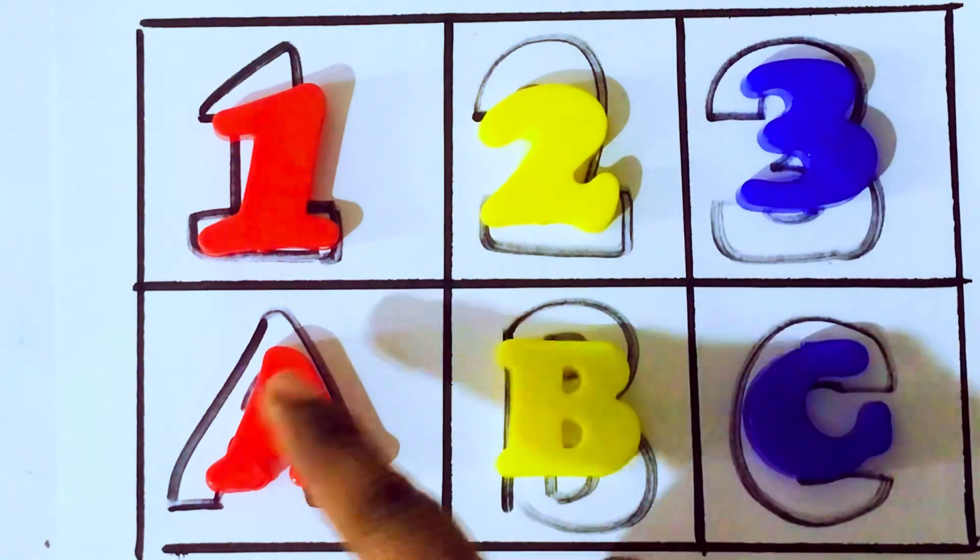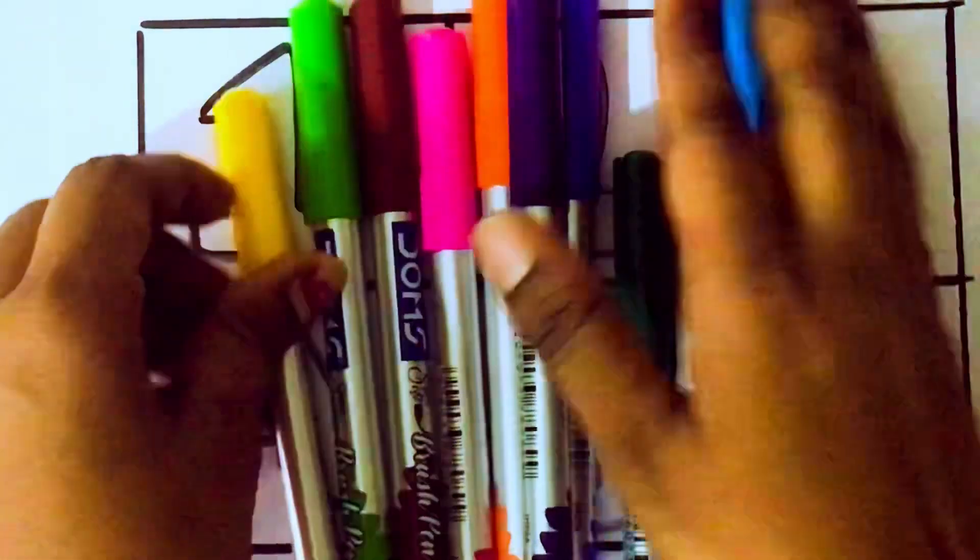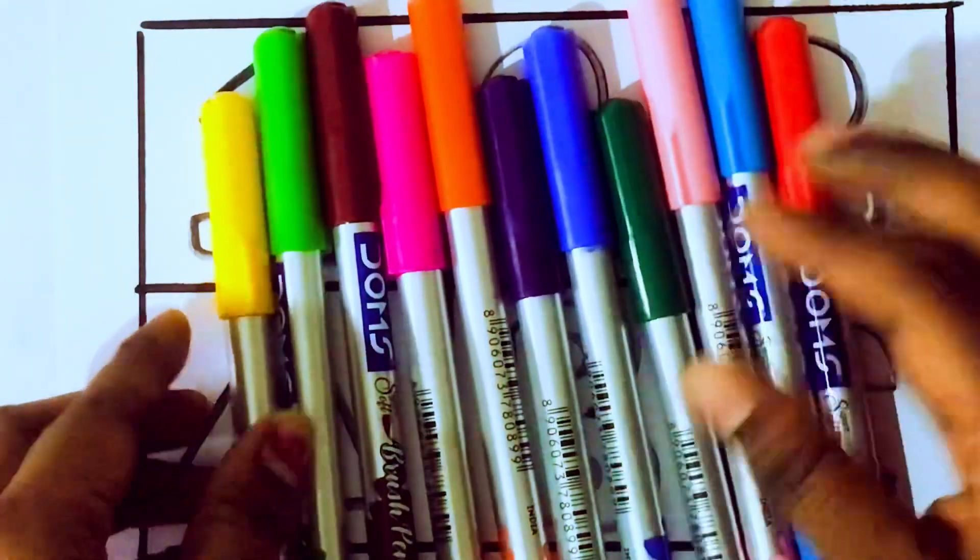1, 2, 3, A, B, C. Okay, let's learn some colors. These are all the color pencils. Let's learn the names.